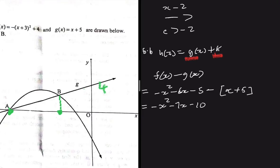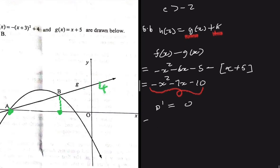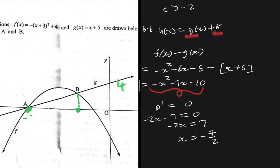This is the equation for the distance between the two graphs. To find the maximum distance, we differentiate and equate to zero. Using the power rule: -2x - 7 = 0, so -2x = 7, giving x = -7/2 = -3.5. And -3.5 is between -5 and -2, so that is the x-value at which the distance between the two functions is at a maximum.